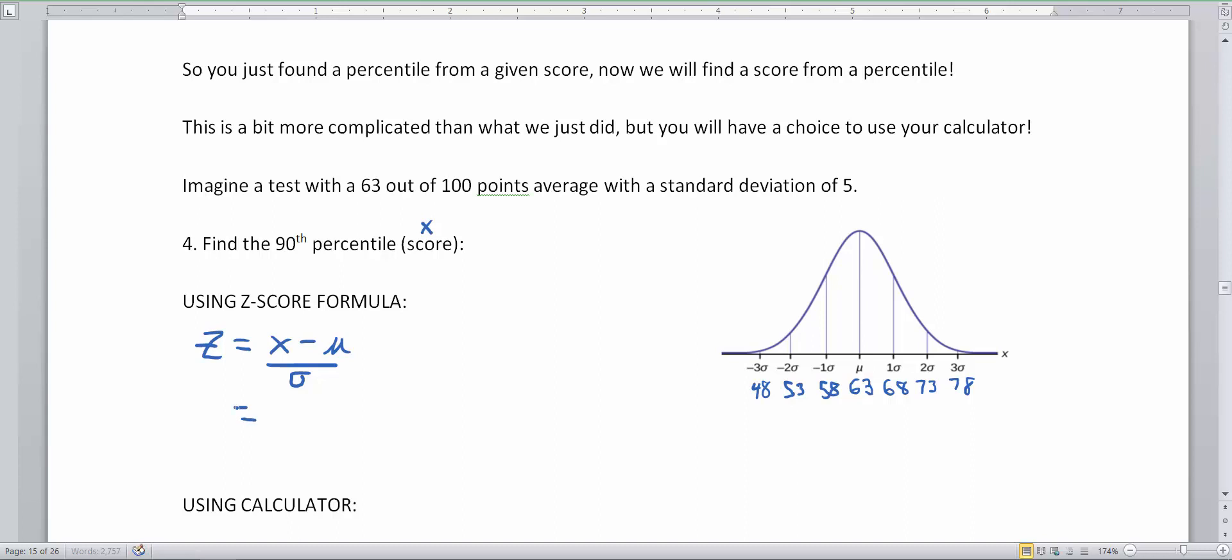So here's what we know. We know we're looking for x. We know our average. In this case our average is 63. We know our standard deviation. And our standard deviation is 5. But we do not know our z-score.